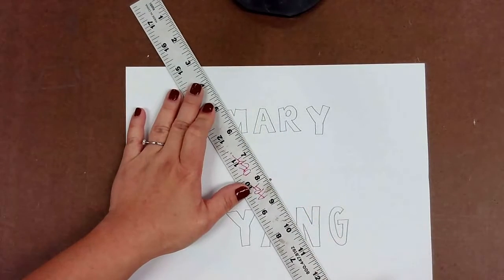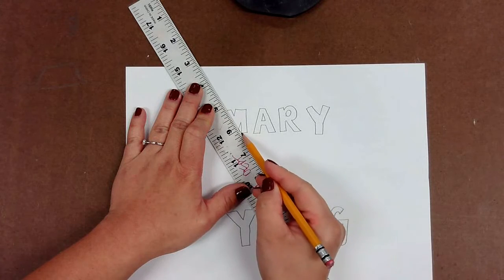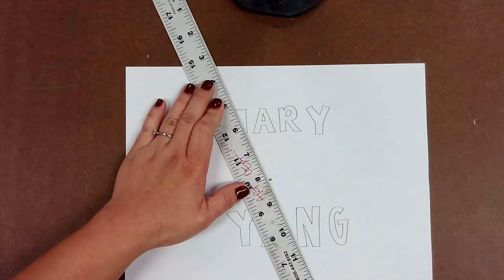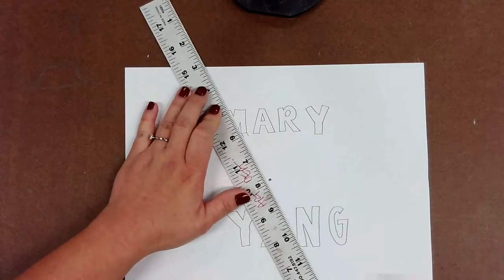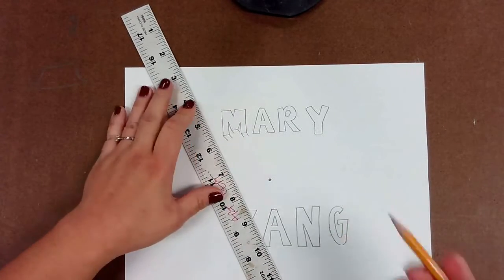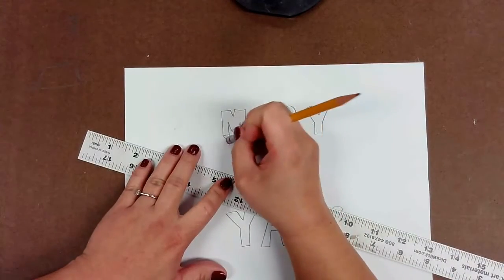So whichever corners you see that are visible to you that can make the letter look as though it is flowing downwards, you're going to go ahead and extend those lines.